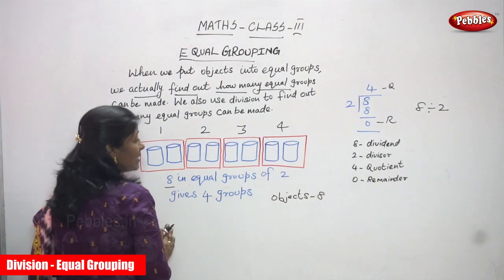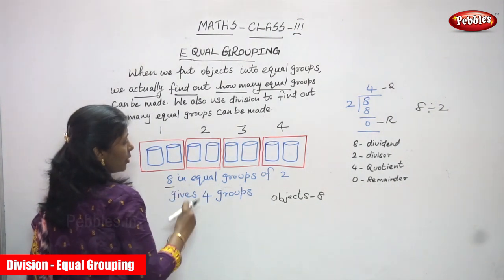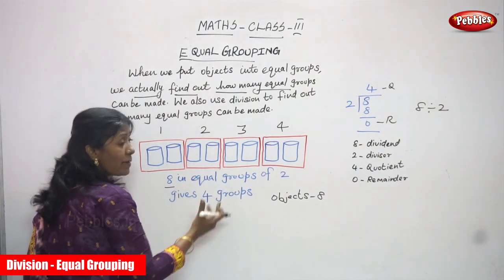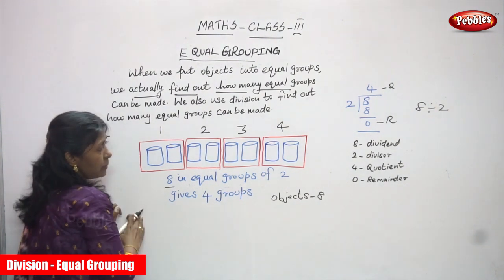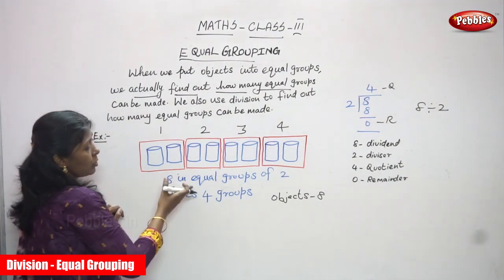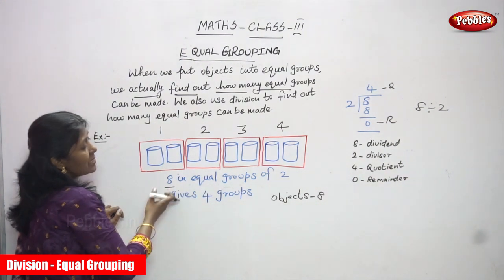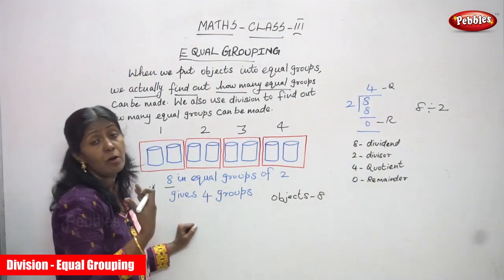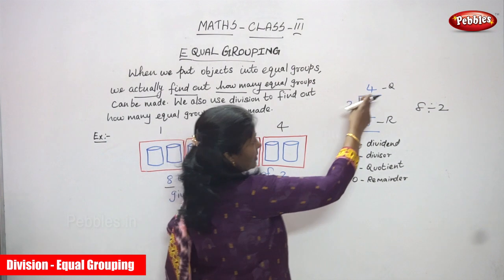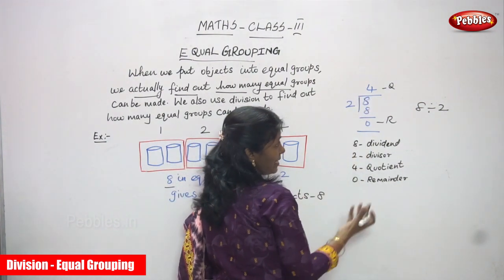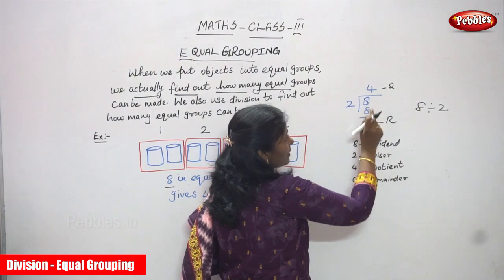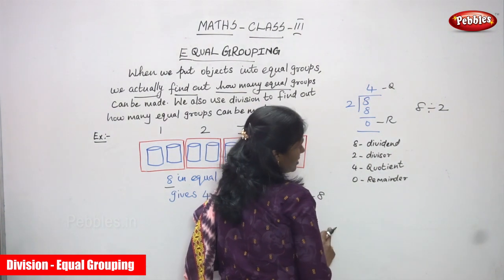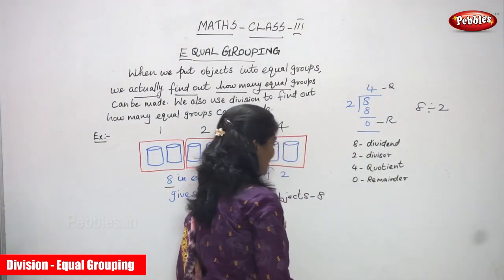Total number of objects is 8. We put them into equal groups of 2 and find out how many equal groups there are. We use division: 8 divided by 2 gives 4 equal groups. 4 is the quotient, 8 is the dividend, 2 is the divisor, and 0 is the remainder.